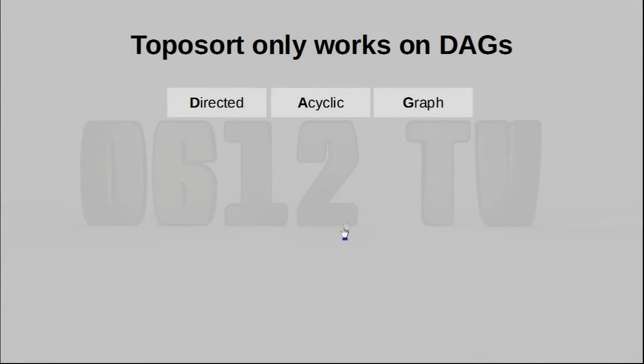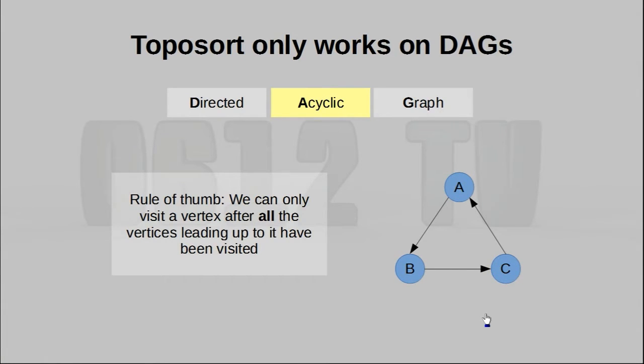We're going to start by first looking at the acyclic aspect of this restriction. So first of all, consider a graph with a cycle. Then apply our rule of thumb for topological sorting to this graph. You realize that what this rule of thumb is basically saying is that we cannot ever visit any one of these three nodes. We cannot visit A because C has not been visited. We cannot visit B because A has not been. We cannot visit C because B has not been. What we've created here is what we can call a cyclic dependency that can never be resolved.